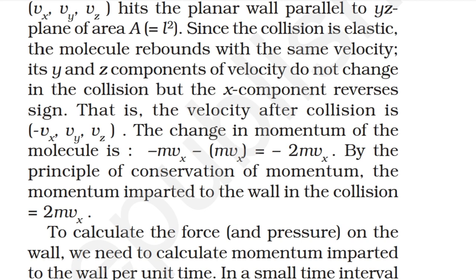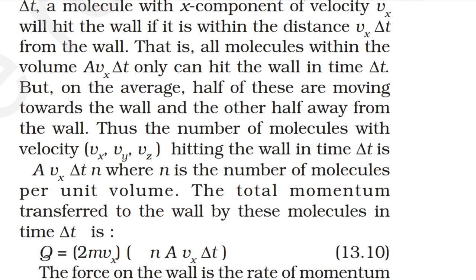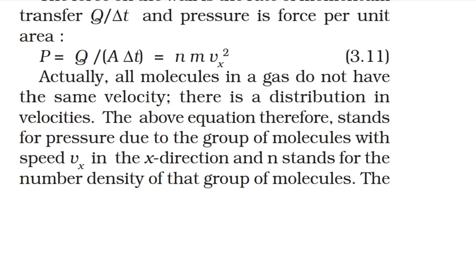To calculate force and pressure on the wall, we need the momentum imparted per unit time. In a small time interval Δt, a molecule with x-component velocity vx will hit the wall if it is within distance vx·Δt from the wall. Only molecules within volume A·vx·Δt can hit the wall in time Δt. On average, half are moving toward the wall. Thus the number of molecules with velocity (vx, vy, vz) hitting the wall in time Δt is ½·A·vx·Δt·n. The total momentum transferred is Q = 2mvx · ½·n·A·vx·Δt. The pressure P = Q/(A·Δt) = n·m·vx².